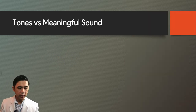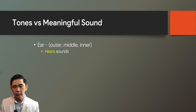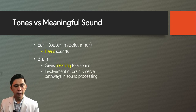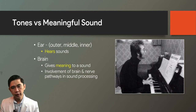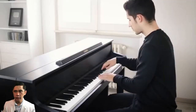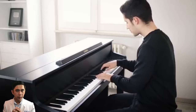The ear is essentially a microphone—it just hears sounds. But when the brain hears the sound presented by the ear, the brain gives meaning to it. For example, when a pianist strikes the keys, we first hear just tones. But when our brain processes and associates those tones with something, it becomes music.